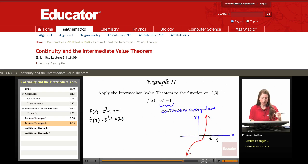The intermediate value theorem says that if we pick any value m between negative 1 and 26, we can find an x value between 0 and 3 such that f of that value gives us the number m.